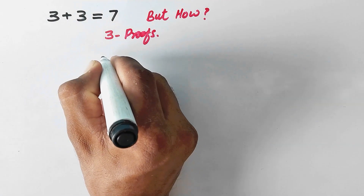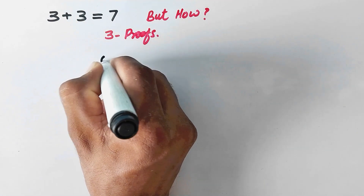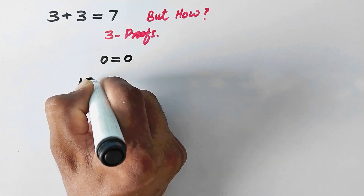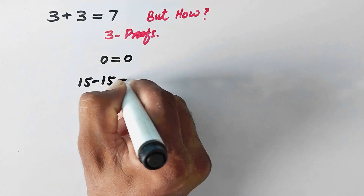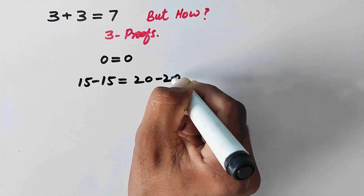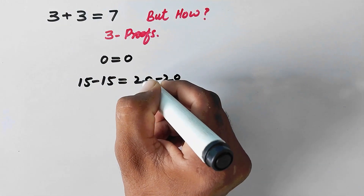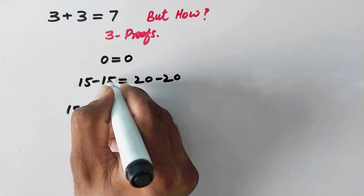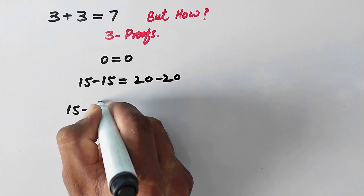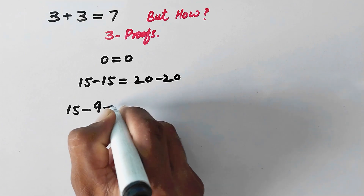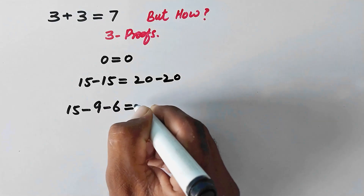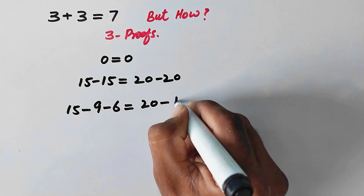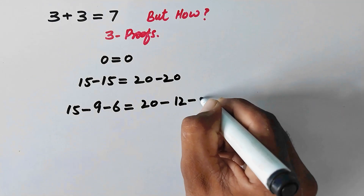Now we are going to our second proof. Here we will write 0 is equal to 0, and 15 minus 15 is equal to 20 minus 20, all equal to 0. We can write 15 minus 15 as (minus 9 minus 6) equal to 20, and 20 can be written as 12 minus 8.